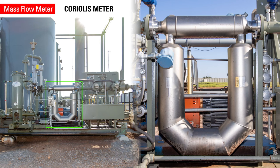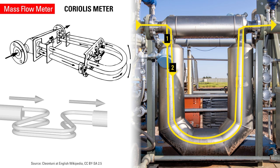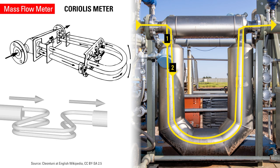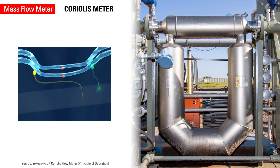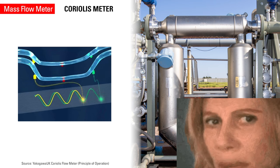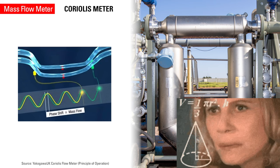The Coriolis meter is the most common mass flow meter used in the oil and gas industry. Using motion mechanics, it splits the process fluid into two tubes oscillating in opposite directions. Voltage is generated by vibrations, sine waves are created, and the time delay in motion is proportional to the mass flow rate.